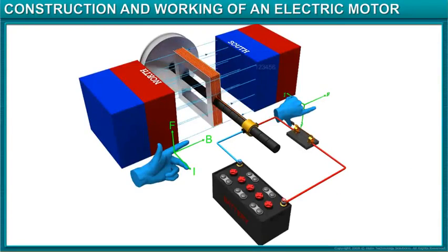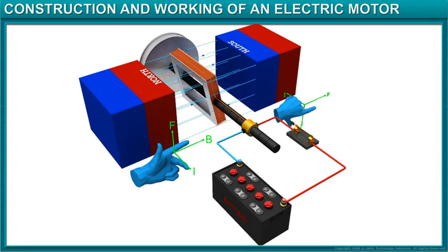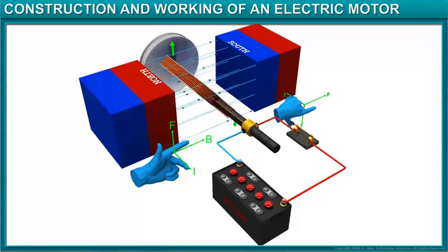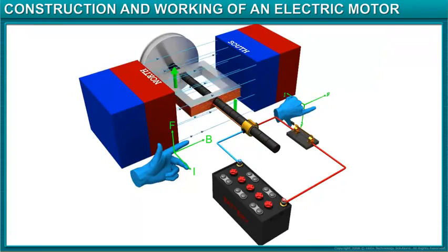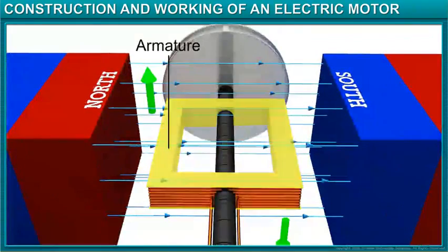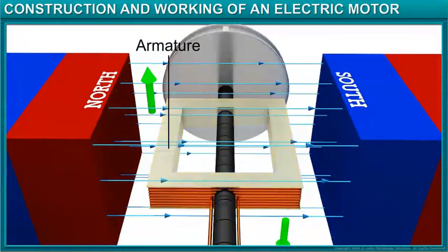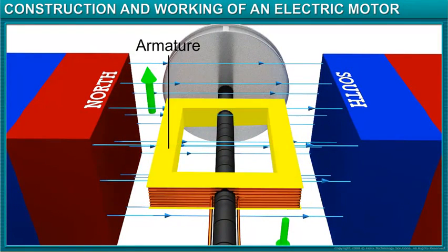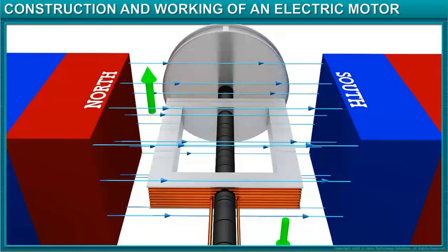An electric motor consists of six main parts. An armature that consists of laminated sheets of soft iron, through which passes a shaft.